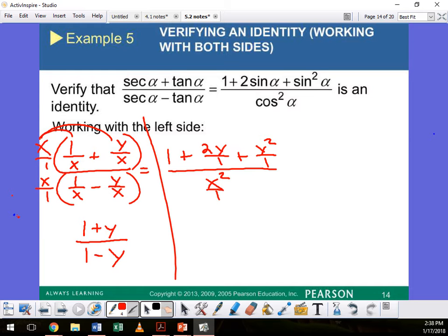Now, I'm going to distribute the bottom. So right here, the x cancels, so it's going to be 1 minus, right here the x cancels. That leaves you with y. I'm going to leave it right there, see what we get.